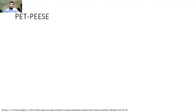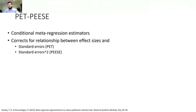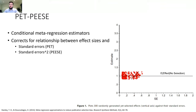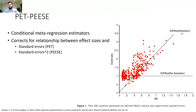PET-PEESE is a conditional meta-regression estimator that adjusts for the relationship between effect size and standard errors, or standard errors squared. The idea is that if there is no relationship between effect size and standard errors — which happens when there is no publication selection bias — then if you fit a meta-regression estimator, the intercept should correspond to the true effect size. However, if there is publication selection bias, you see a higher number of small studies with large standard errors that overestimate the effect size.